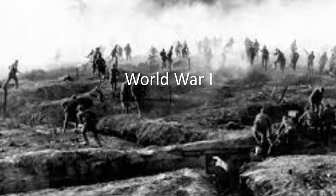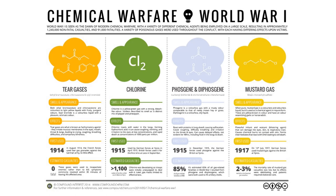During World War One, the German and French armies used different types of crowd controlling agents. One used chlorine gas, which is yellowish or greenish in color. Another group used mustard gas. Other types included phosgene, and later CS and CN type gases have been used since that time.